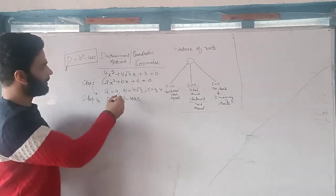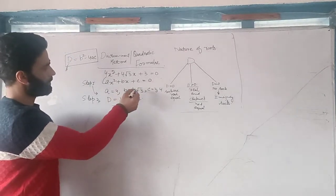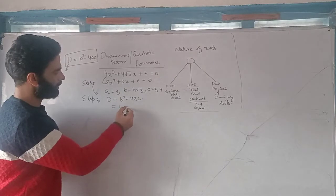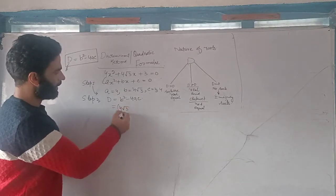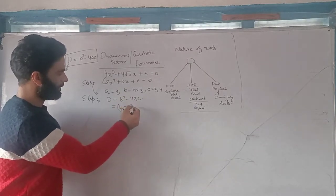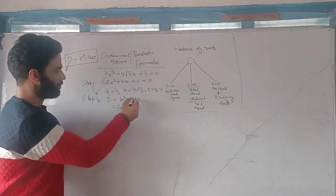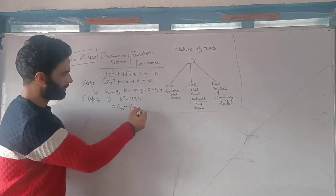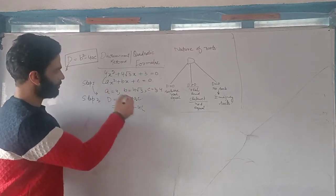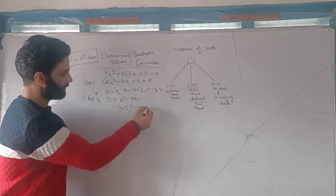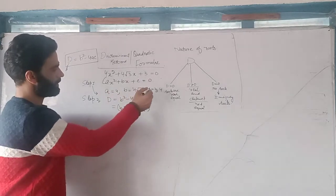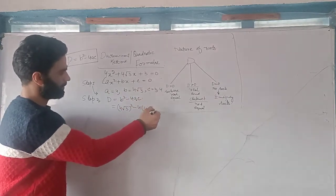What is b square? b is 4 under root 3, so b square is 4 under root 3 all squared. Minus 4 into a — what is the value of a? That is 4. And what is the value of c? That is 3.